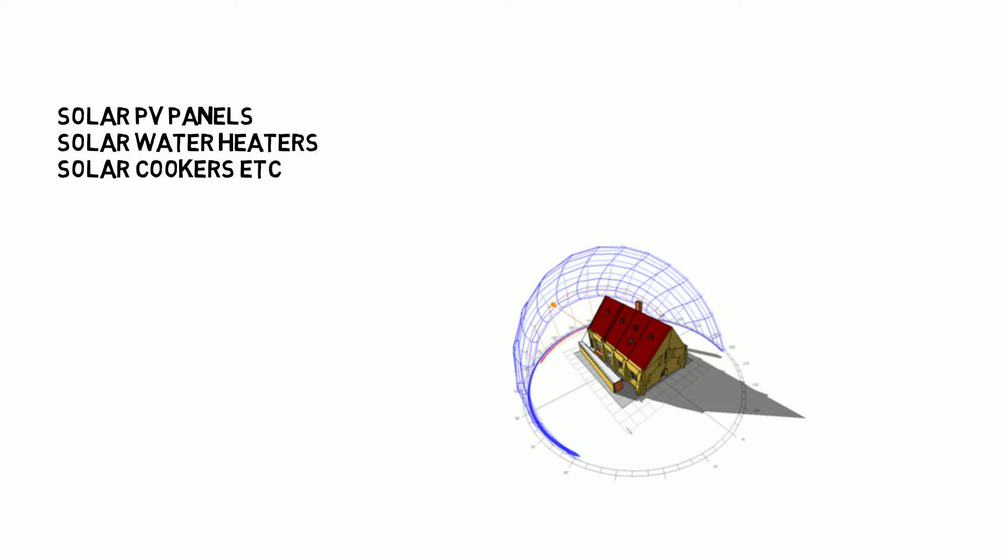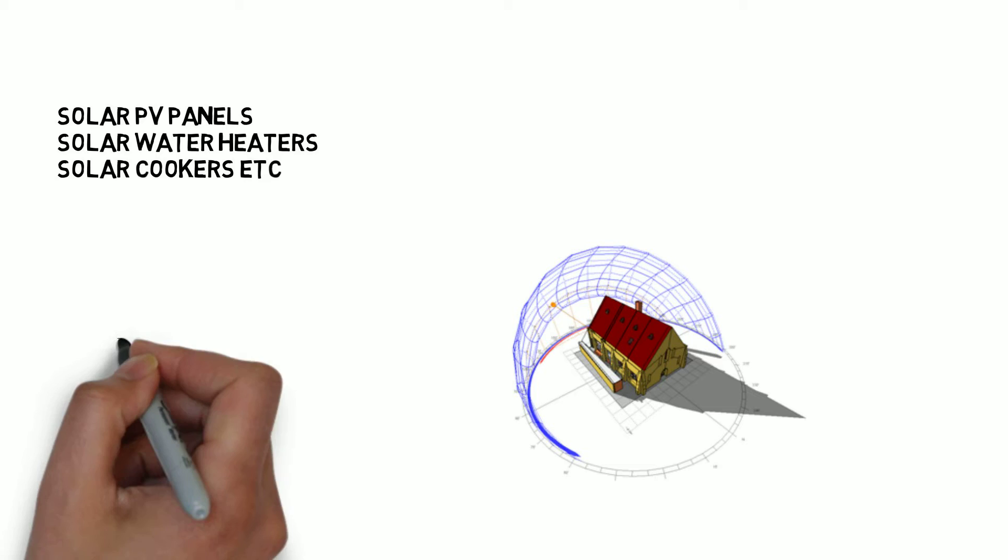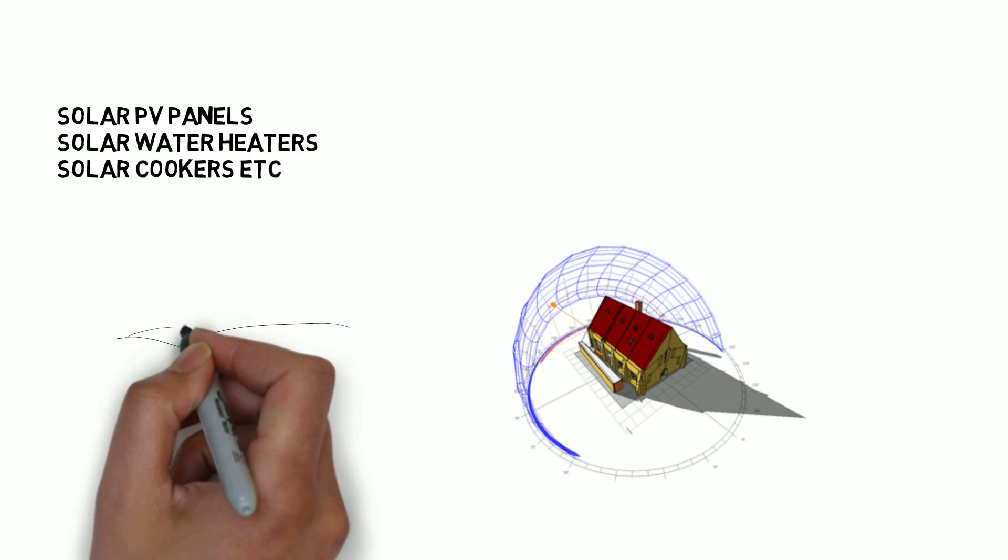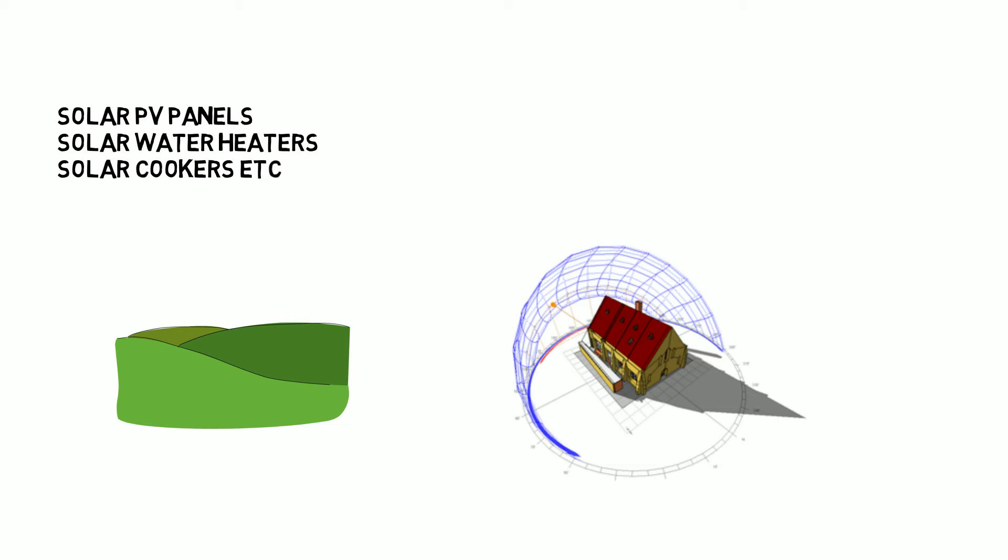There may be situations where the panel angle may be changed slightly due to localized obstacles. For example, in certain locations where there is a hill located or where there is fog in the morning, the panel in the northern hemisphere may be tilted slightly to face southeast or southwest direction. However, the general rule is for the panel to face due south in northern hemisphere and vice versa in the southern hemisphere.